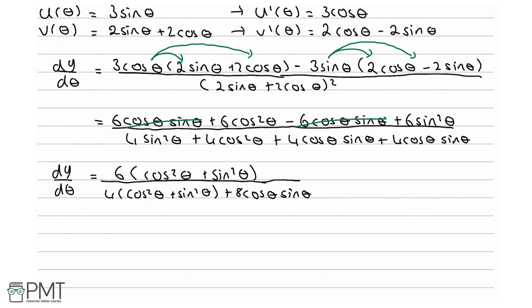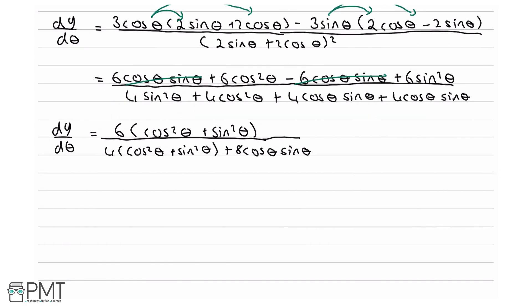Now I'm going to introduce two trigonometric identities. The first is cosine squared theta plus sine squared theta equals 1. The second is 2 sine theta cosine theta equals sine 2 theta.